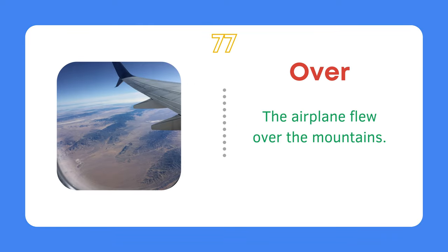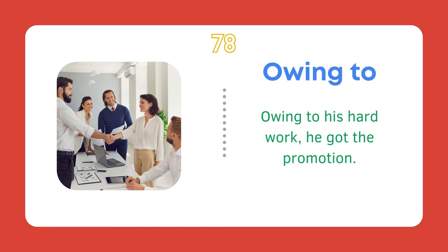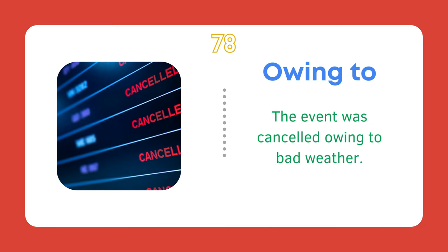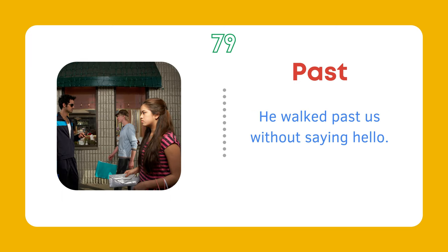Over. The airplane flew over the mountains. He placed a sheet over the table. Owing to. Owing to his hard work, he got the promotion. The event was cancelled owing to bad weather. Past. The store is just past the traffic light. He walked past us without saying hello.